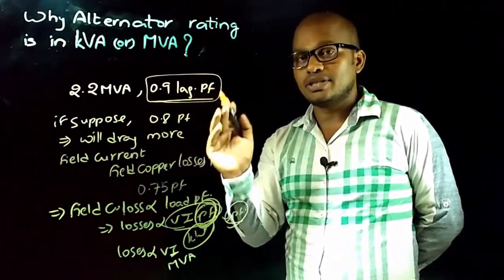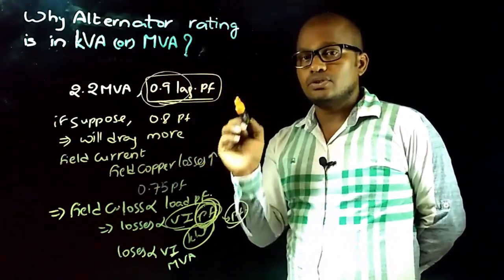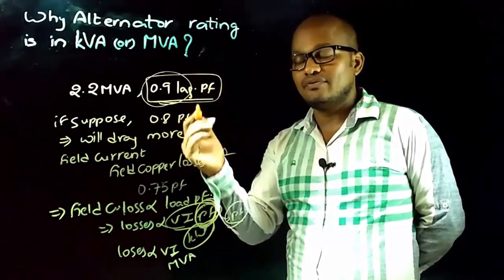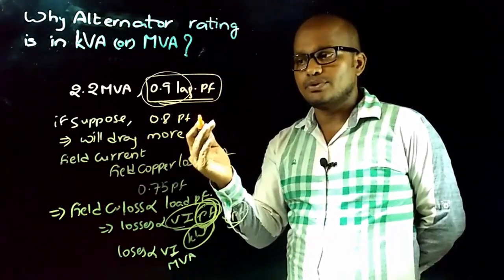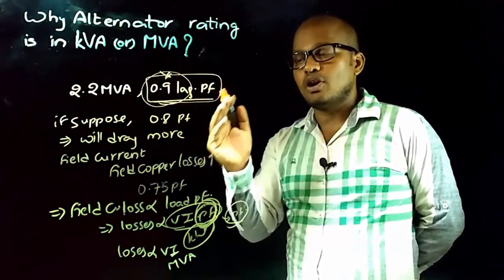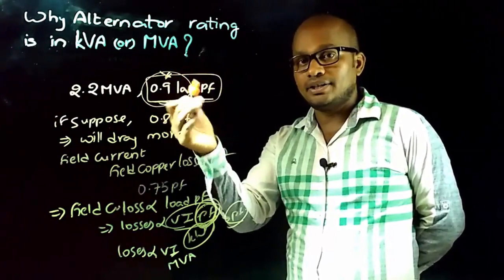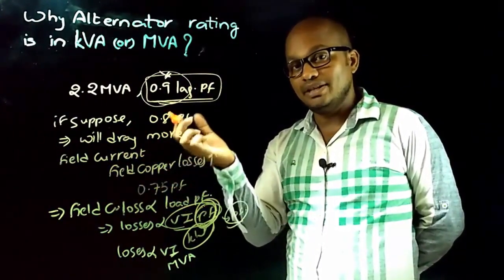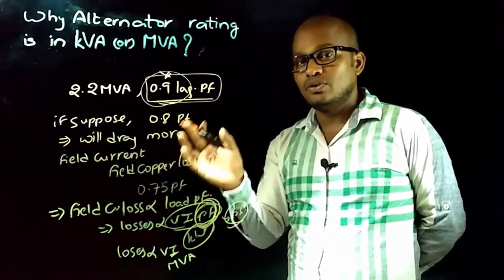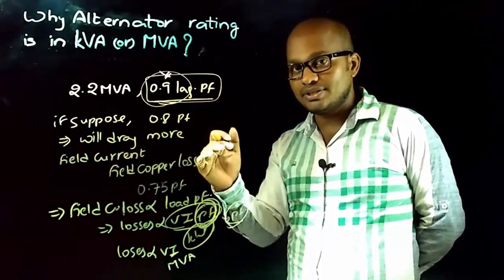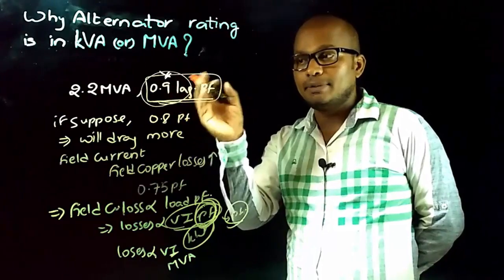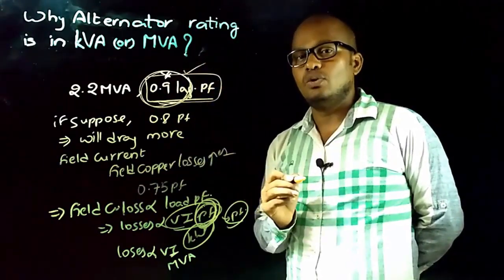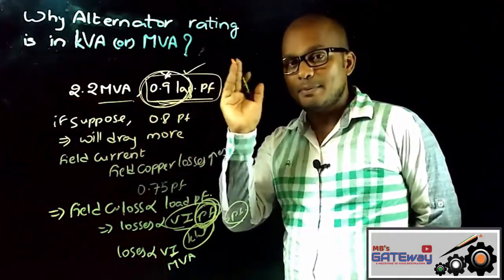Therefore, the rating of the alternator is in MVA when the power factor is fixed. The nameplate details specify that the alternator must be operated at a particular load power factor at rated load, so heating in the machine stays within limits. If the designer did not specify the load power factor, the operator might operate at different power factors, causing the alternator to draw more field current, increasing copper losses and heating enormously, which might damage the alternator.